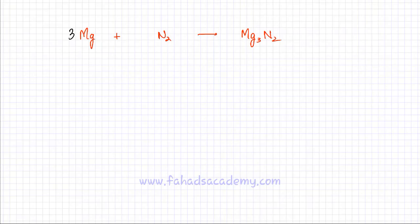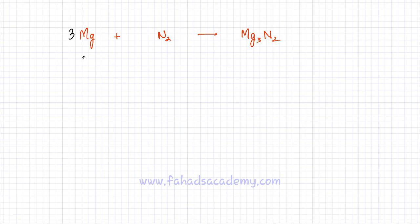In this second example, you can see that magnesium is reacting with nitrogen to produce magnesium nitride. It's a balanced equation, and the equation states that 3 magnesiums react with 1 molecule of nitrogen and it's producing 1 formula unit of magnesium nitride. So the ratio is 3 magnesiums react with 1 nitrogen and they produce 1 magnesium nitride — that is the simplest ratio.